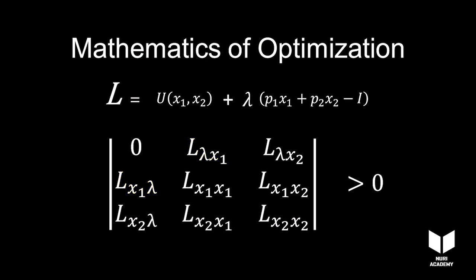Also, row 1 column 2 and row 2 column 1 equal p1. And row 1 column 3 and row 3 column 1 equal p2.